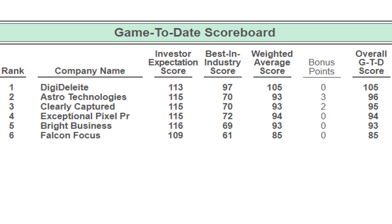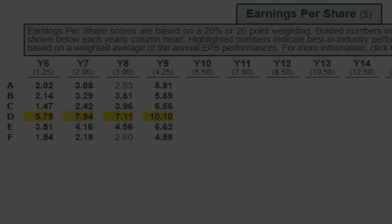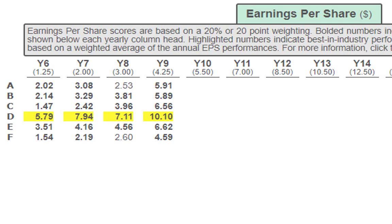Let's look at earnings per share, return on equity, and stock price. For earnings per share, Company D is best in industry. With that said, everyone met expectations — great job, keep it up. Clearly what you're doing is working; just continue enhancing it.